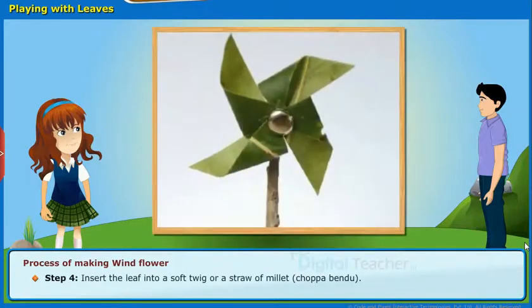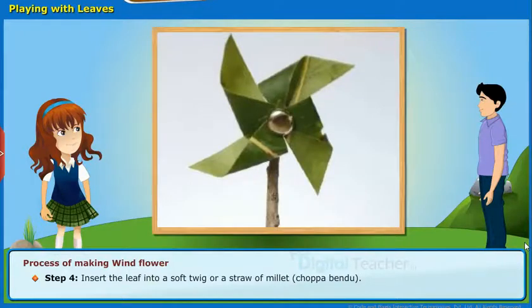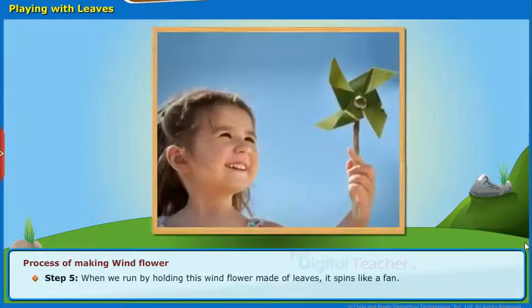Step 4: Insert the leaf into a soft twig or a straw of millet or choppa bendu. Step 5: When we run by holding this windflower made of leaves, it spins like a fan.